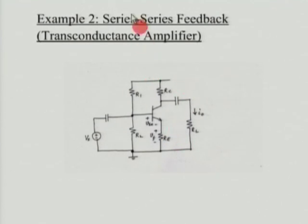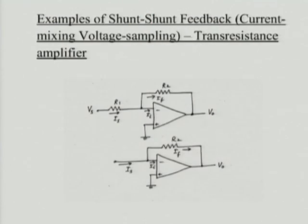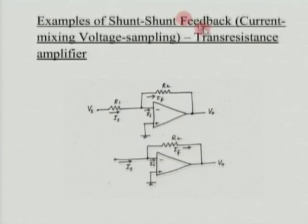Here is an example of an op-amp based transconductance amplifier — voltage input, current output, with the fed-back voltage V_F being a fraction of the output current. Another example is the unbypassed common-emitter amplifier, which you can think of as a transconductance amplifier with negative feedback. On the input side we have series mixing, so the input resistance increases; on the output side, if you analyze the common-emitter amplifier with unbypassed resistor, you see that the output resistance increases too — this is why it is a series-series feedback.